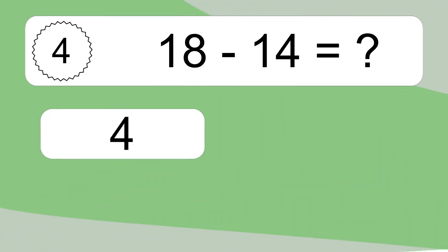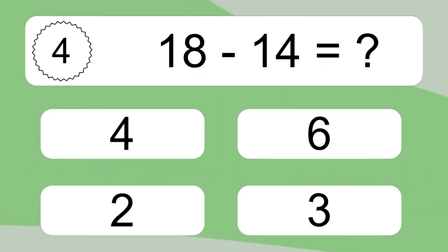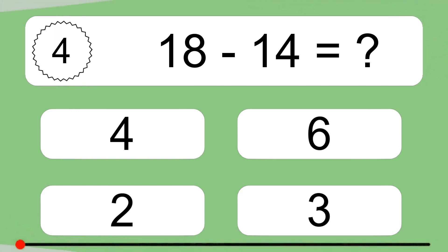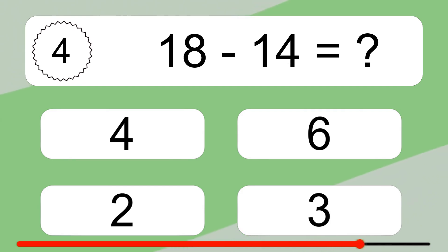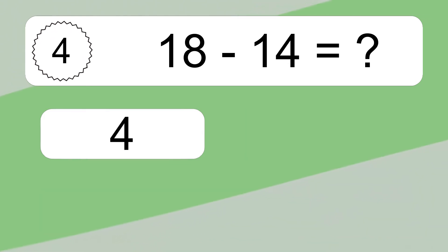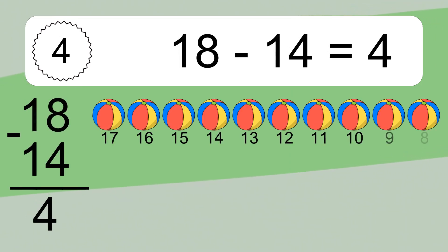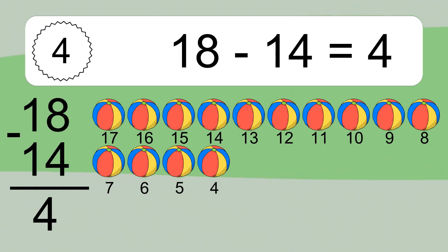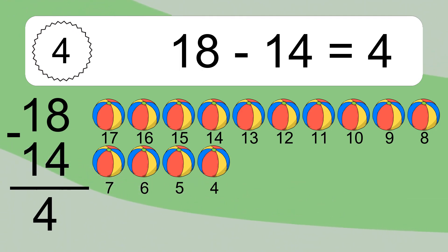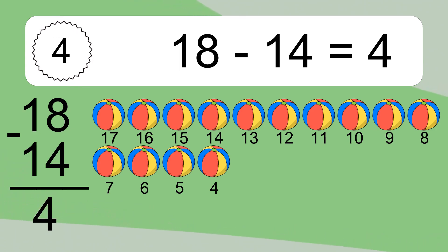18 minus 14 equals what? 18 minus 14 equals 4. Let's count it: 17, 16, 15, 14, 13, 12, 11, 10, 9, 8, 7, 6, 5, 4.